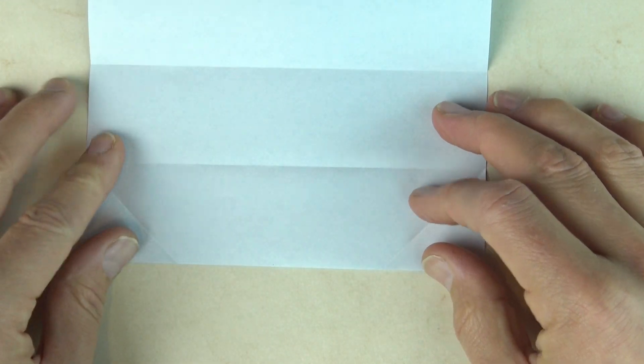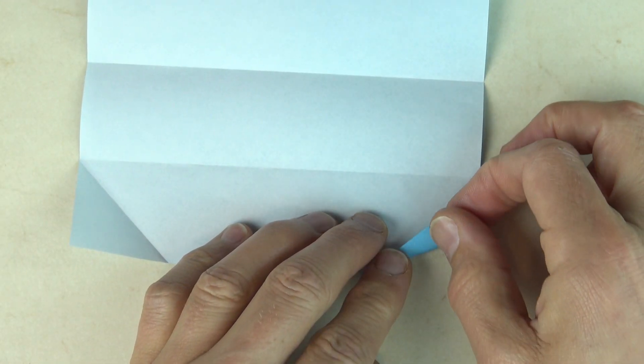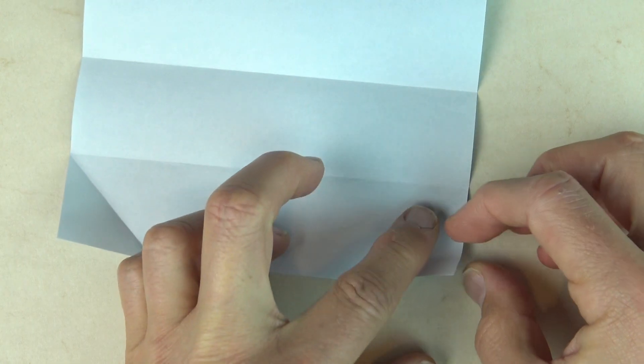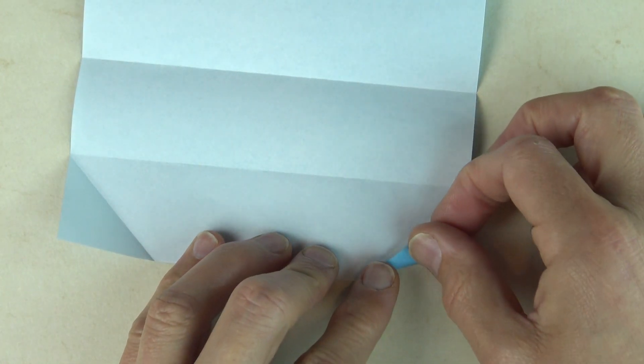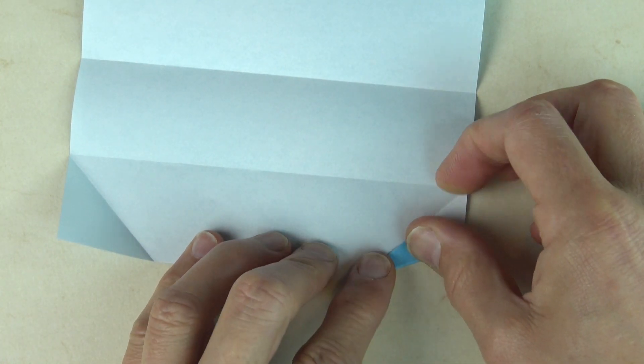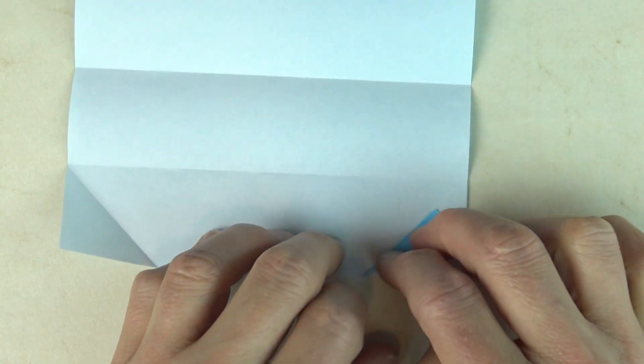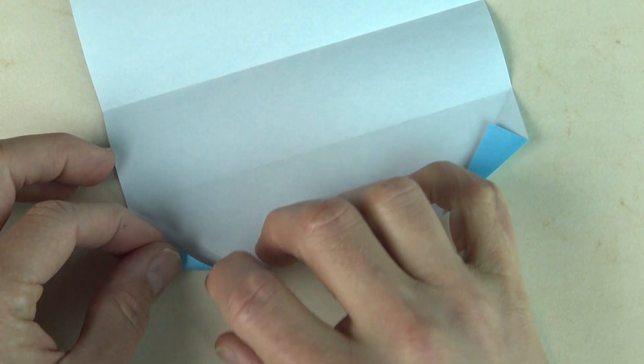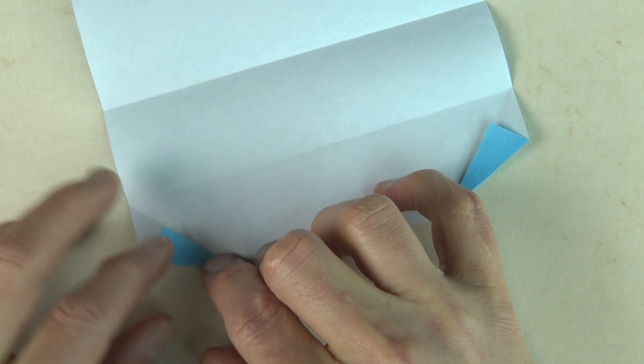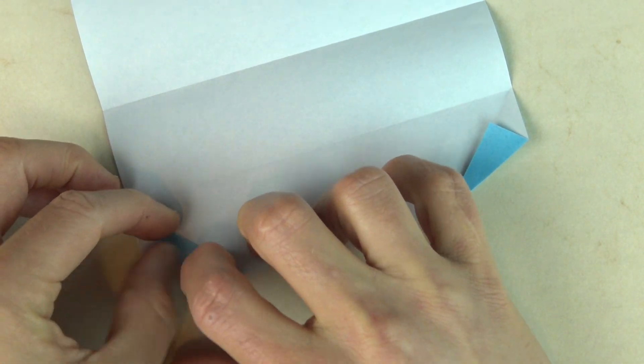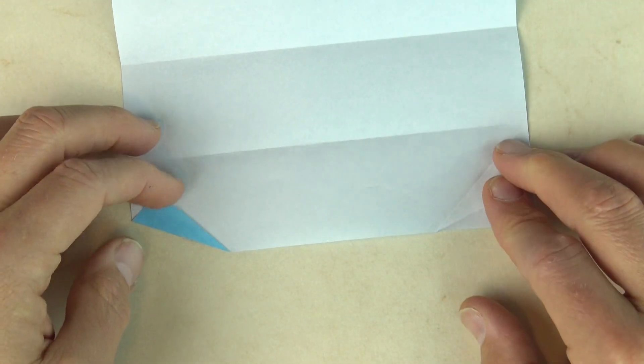Unfold both those flaps. And now fold the flap so that this edge aligns with the crease. And repeat.